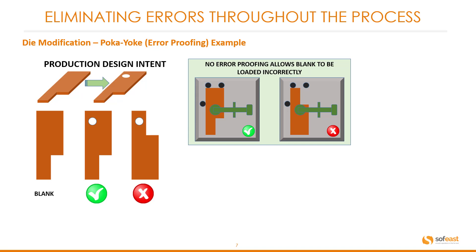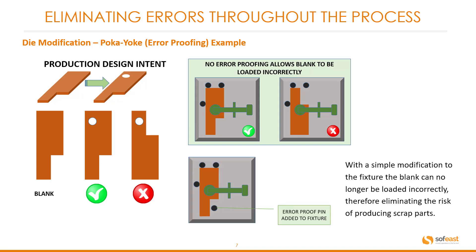Let's have a look at the Poka-Yoke solution, which is simply adding an error proof pin to the fixture. With this simple modification, the blank can no longer be loaded incorrectly, therefore eliminating the risk of producing scrapped parts.